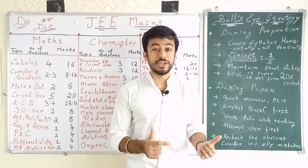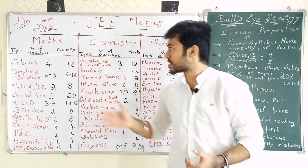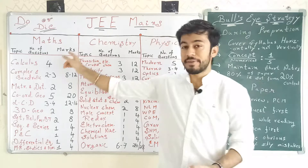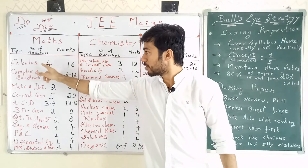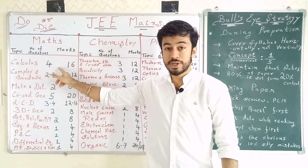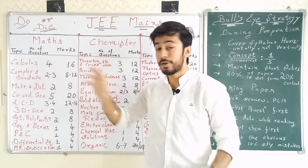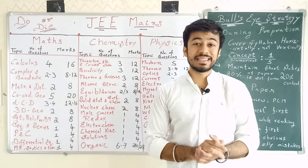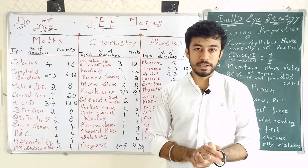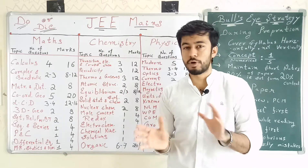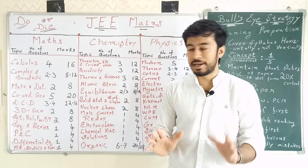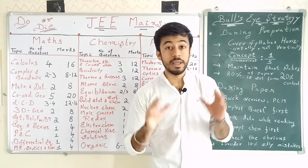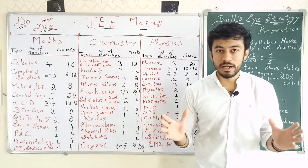Let's get started. Starting with Mathematics: Calculus — 4 questions, 16 marks. Complex numbers and Quadratic — 2 to 3 questions, 8 to 12 marks. Matrices and Determinants — two questions, 8 marks; one would be simple and one would be of a decent level.